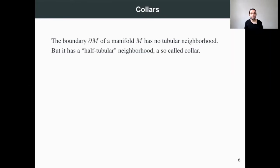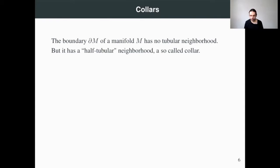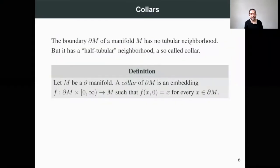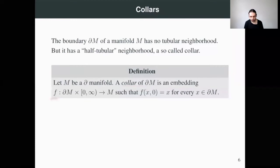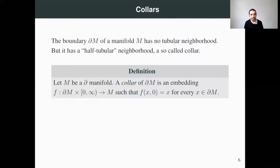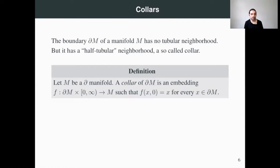Unfortunately, the boundary of a manifold has no tubular neighborhood, but it has a so-called collar. The definition is the following: let M be a manifold with non-empty boundary. A collar of the boundary is an embedding F from the boundary of M times the closed interval [0, ∞) such that F(x, 0) equals x for every x in the boundary of M. You can consider this almost as a trivialization of the normal bundle of the boundary of M in M.